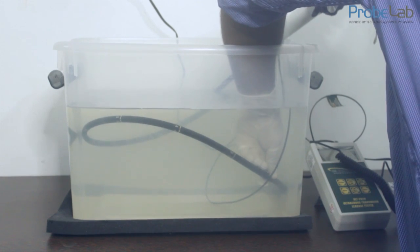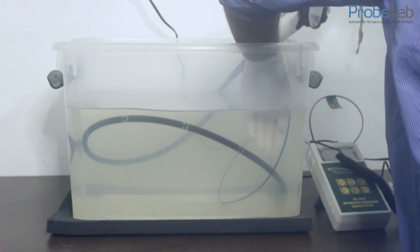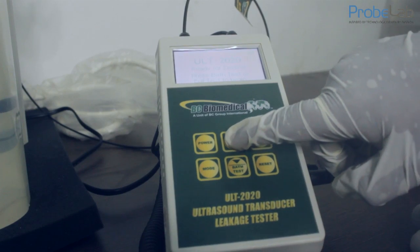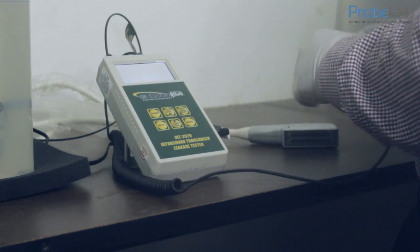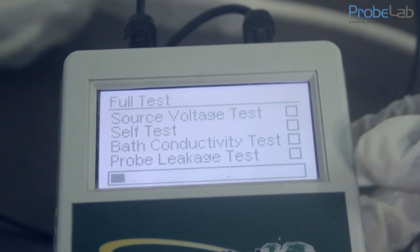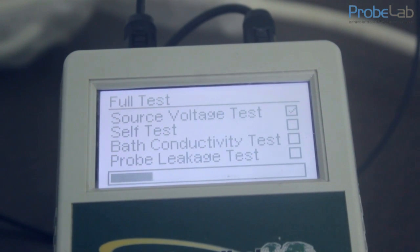Switch on the leakage device. Here we are using the ULT-2020 from VZ by Mannequin. Connect the test lead to the pins of the connector and perform the full test. The device performs connectivity as well as leakage testing.